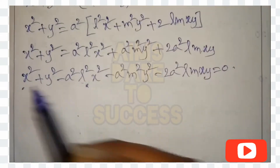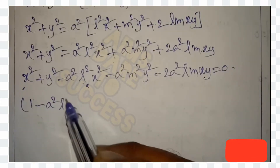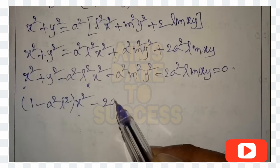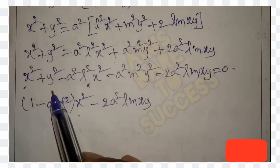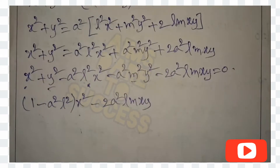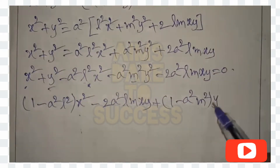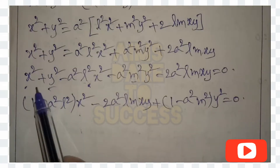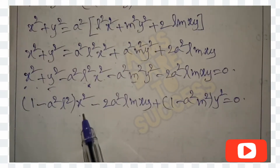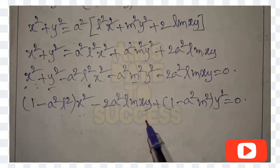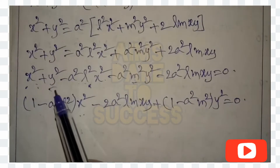Now take x², xy, and y² terms together. Collecting x² terms: (1 - a²l²)x². The xy term gives: -2a²lm·xy. Collecting y² terms: (1 - a²m²)y². So the equation becomes (1 - a²l²)x² - 2a²lm·xy + (1 - a²m²)y² = 0. This is of the form ax² + 2hxy + by² = 0.